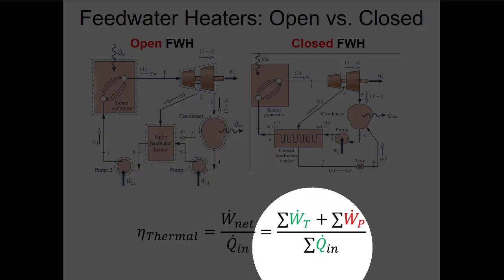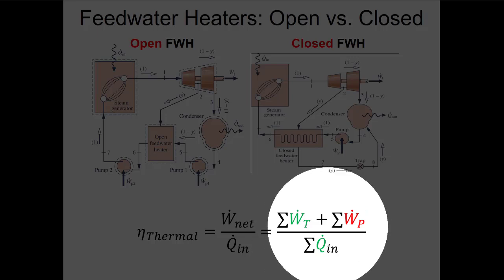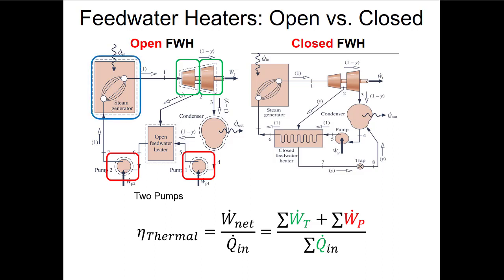When finding thermal efficiency, we use this generic equation: the sum of turbine powers plus the sum of pump powers, all divided by the sum of all places where we add heat. With our open feed water heater we have two turbines, two pumps, and one place where we're adding heat. We often want to find the fraction of mass flow diverted — typically called y — usually by doing a first law analysis on the open feed water heater.